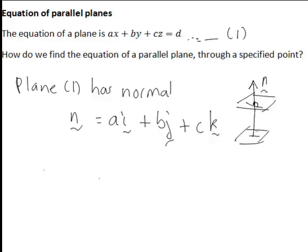So if they're parallel, it will actually intersect both our planes at right angles. So therefore, the parallel plane also has this normal vector.